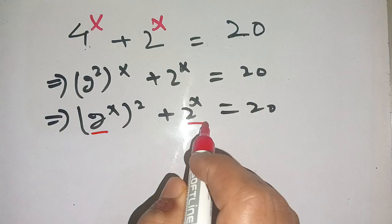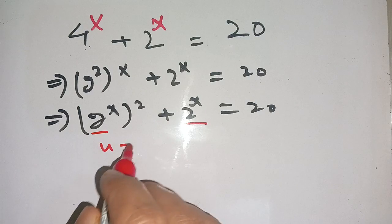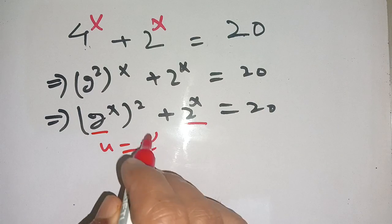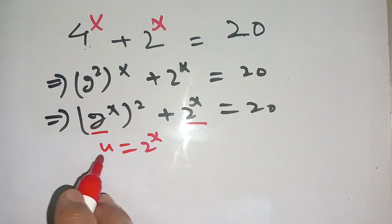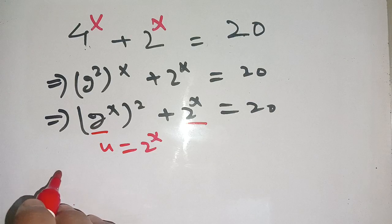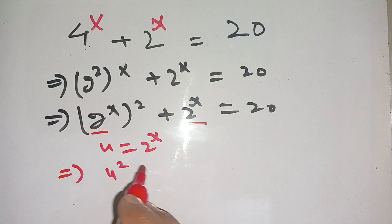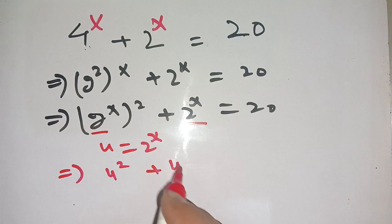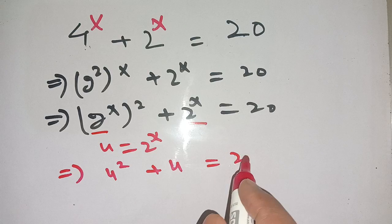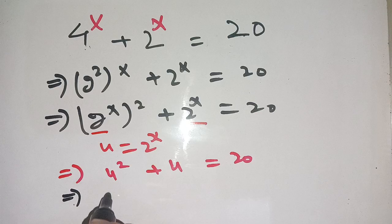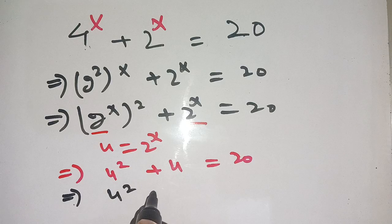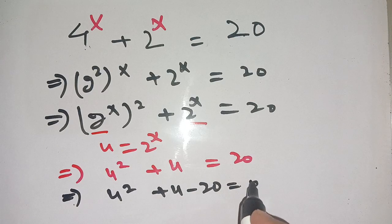Notice that in both terms we have 2^x. Suppose that u = 2^x. Let us replace 2^x by u. We get u² + u = 20. This is a quadratic equation. We can write this as u² + u - 20 = 0.